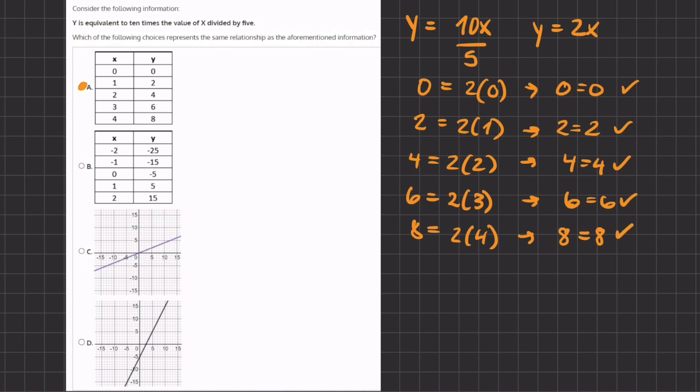So A will be the correct answer, and let's quickly go over why B, C, and D are incorrect. Now let's do the same for B. Let's plug in our first point. We have negative 25 equals 2 times negative 2, and these two values do not equal one another. We have negative 25 that does not equal negative 4. Therefore, we can eliminate B as an option.